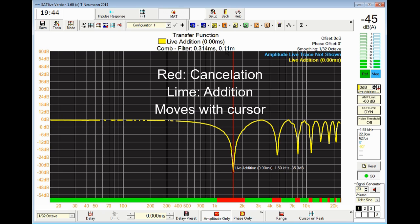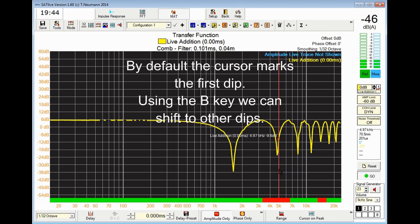The whole display is moved with the cursor. By default the cursor is first cut in the frequency area.